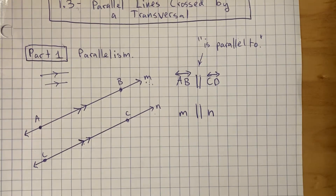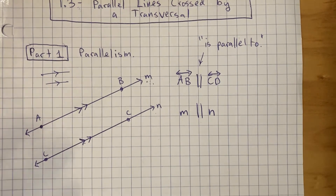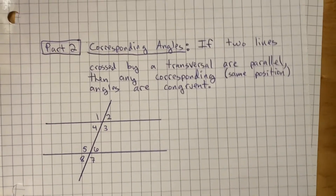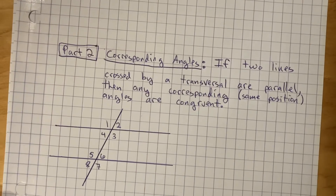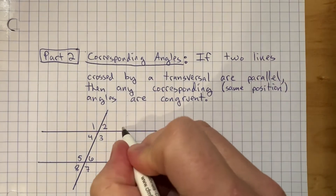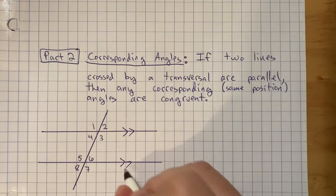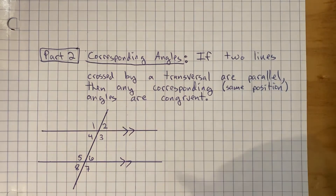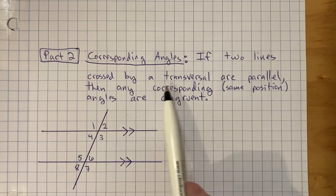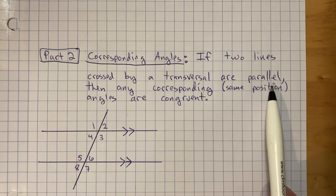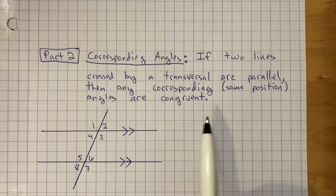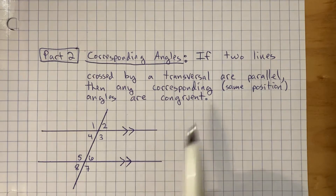What's really more important than just understanding how to label parallel lines is the corresponding angles property. You should pause the video and write this down if you haven't already. It says: if two lines crossed by a transversal are parallel, then any corresponding angles — which means same position — are congruent.